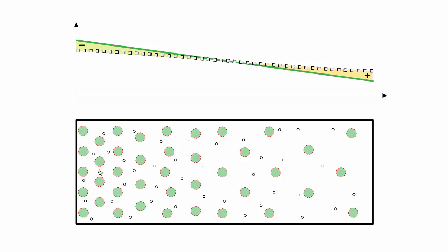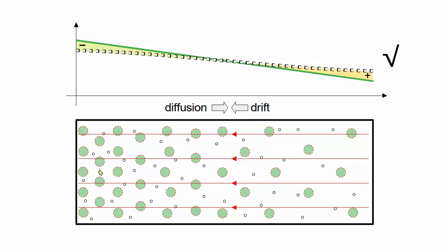This graph shows the actual equilibrium state. The hole concentration slope causes diffusion toward the right, but this is exactly balanced by drift toward the left. Although holes are constantly in motion, the total net flow is zero at every point along the block of silicon.